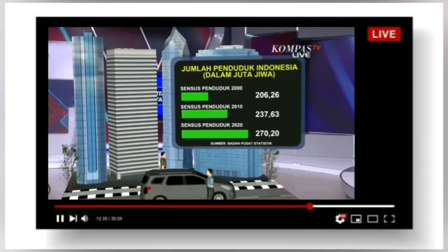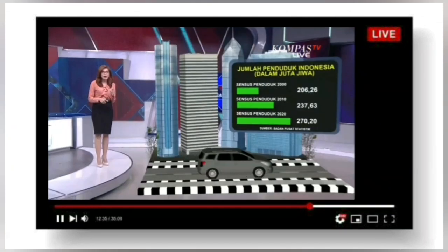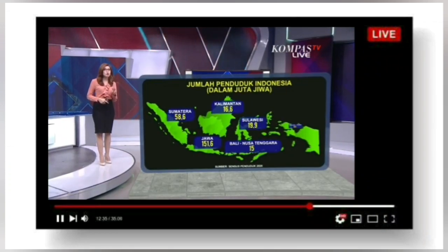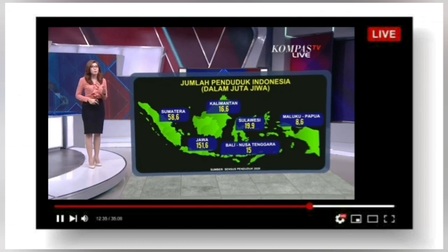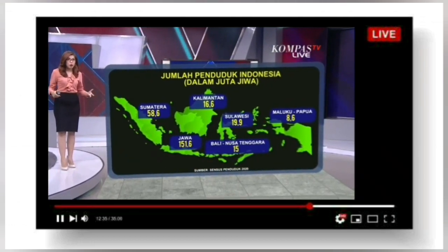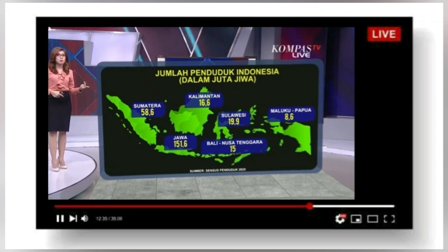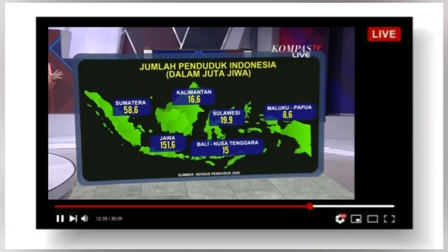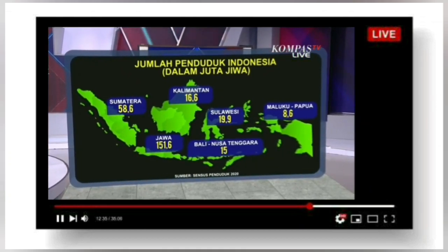Lebih dari 50 persen terkonsentrasi di Pulau Jawa sebanyak 151,6 juta orang, dan terbanyak berada di Jawa Barat. Di posisi nomor dua, 21,68 persen penduduk Indonesia berada di Sumatera. Diikuti oleh Sulawesi, Kalimantan, Kawasan Bali, Nusa Tenggara, dan terakhir Maluku dan Papua.